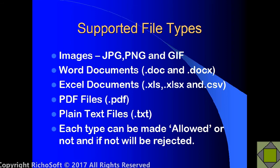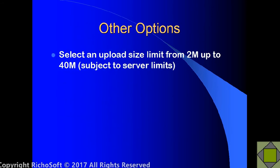Each file type can be made allowed or not, and if they are not then they will be rejected. You can set an upload size limit anywhere from 2MB to 40MB, but that will be subject to your server limits. There are details in the guide on how, on most servers, you can increase the server limit. Most hosts set their servers to a maximum upload of 2MB, but you can usually change that with a .htaccess file — 40MB is about the maximum recommended, otherwise uploads will take too long and may cause script timeouts.